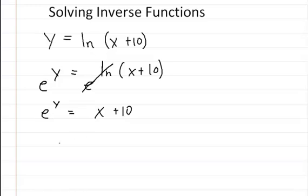Then you just move over the 10, so you get x equals e to the y minus 10. Now you're almost done, and you've got to remember with inverse functions that you have to change the x to the y and all the y's to x's.